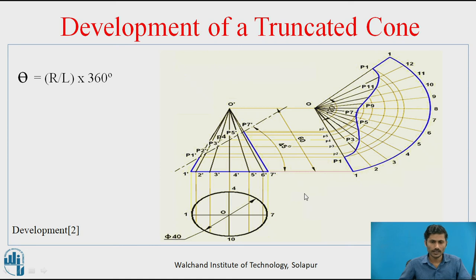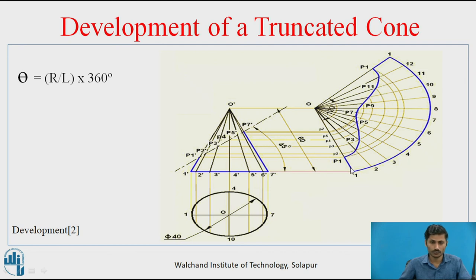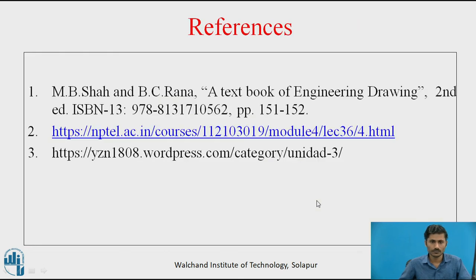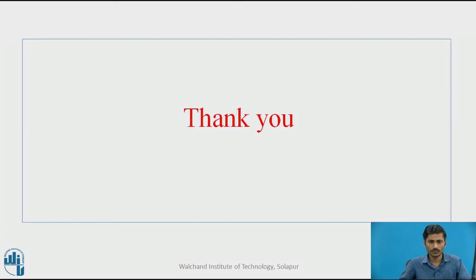Think about what the profile might be if the direction of the cutting plane is changed — for example, if the 45-degree cutting plane is tilted the other way, or if the cutting plane is parallel to HP (parallel to the XY line). Would we get the same profile or slight changes? Think about that. This is the reference used. Thank you.